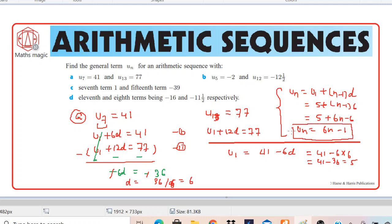You can verify whether it is working or not. So you just check. We have n as 7, so replace 7 with n. So 6 times 7 is 42 minus 1, 41. That's correct. Now you can replace with 13. So 6 into 13 is 78 minus 1, 77. That's correct. That means it's working.